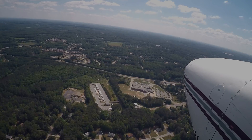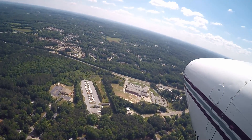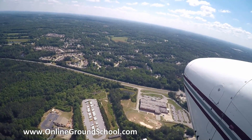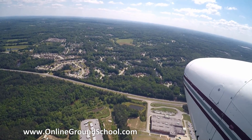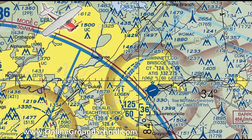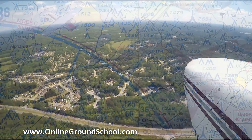Okay, here we are at about 2,800 feet, inbound to Gwinnett County — that's KLZU. We're going over there for a hundred-dollar hamburger. We're currently about 12 miles to the northwest, so the first thing we're going to do is get the ATIS, find out the letter, get the altimeter setting, and check the wind.